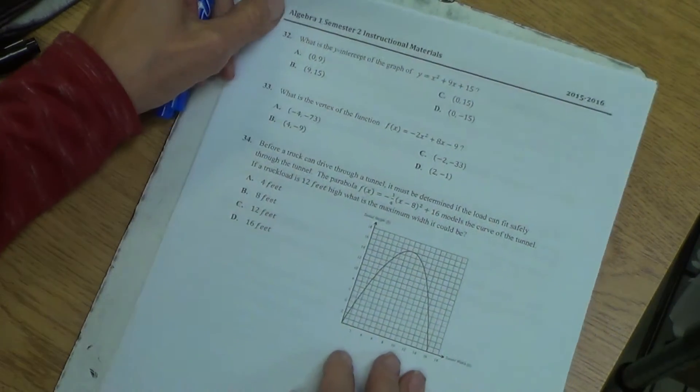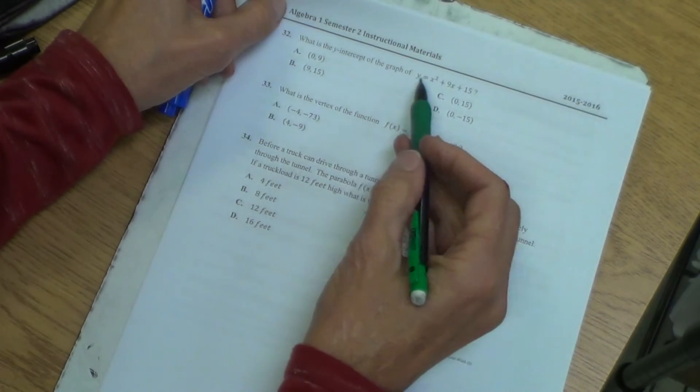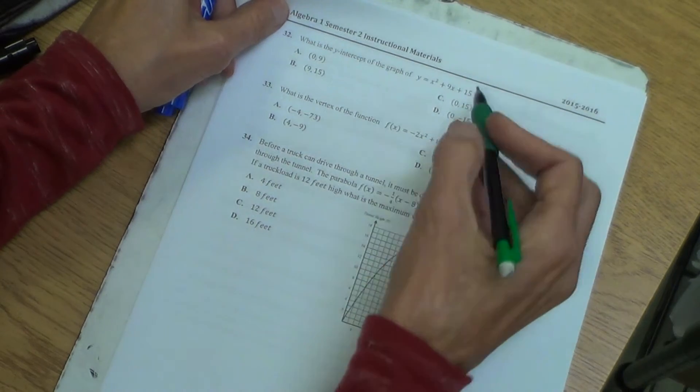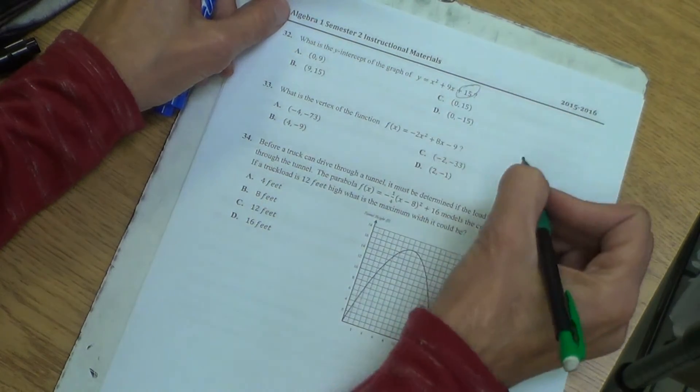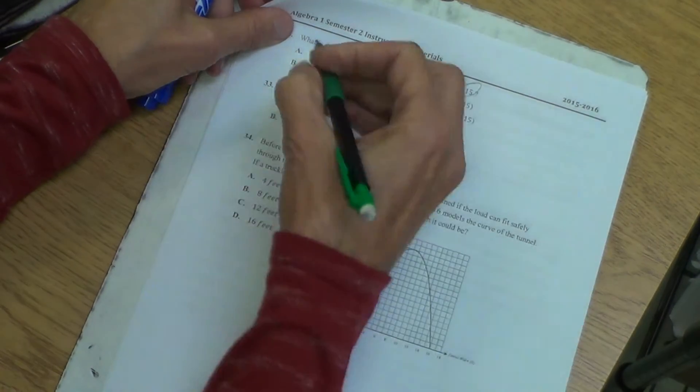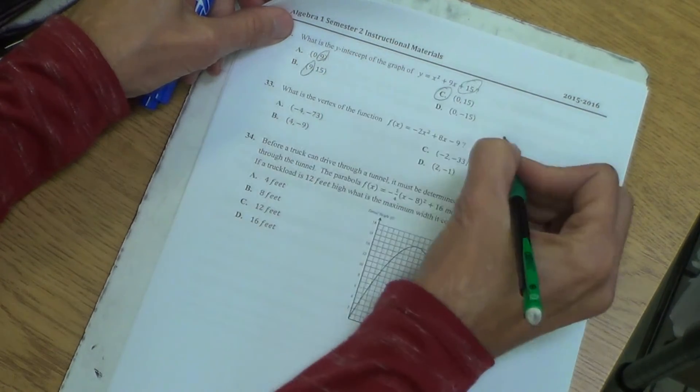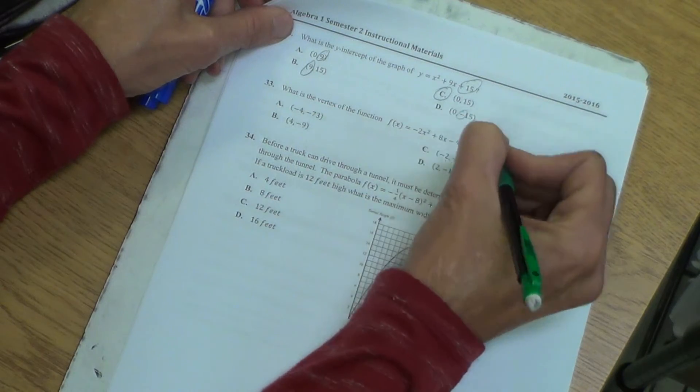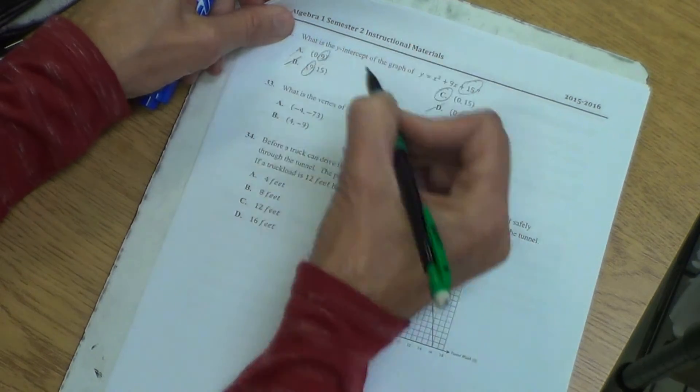Last little bit of unit 9. What is the y-intercept of this graph? Remember, the y-intercept is your c value. So it's positive 15. 9 wrong, 9 wrong, and negative 15. Then negative is wrong.